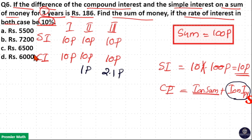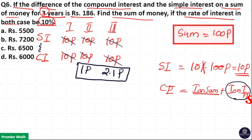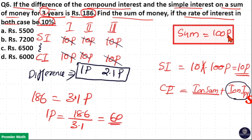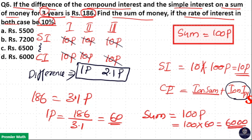Taking the difference between simple interest and compound interest: the 10 parts, 10 parts, 10 parts (simple) and 10 parts, 10 parts from compound interest cancel each other, leaving 1 part plus 2.1 parts as the difference. The difference mentioned in the question is rupees 196. So 196 equals 3.1 parts. Therefore, 1 part equals 196 divided by 3.1, which equals 60. The sum equals 100 parts, which is 100 into 60, that is 6,000. So option D is your answer.